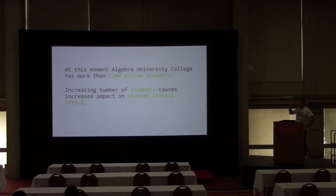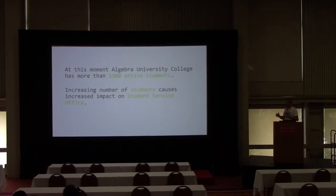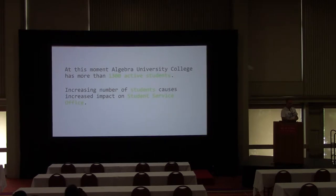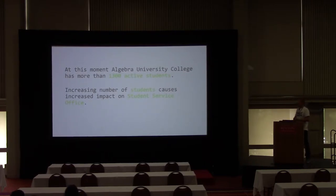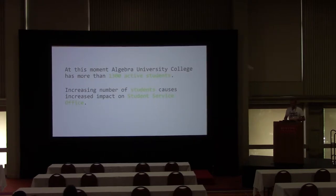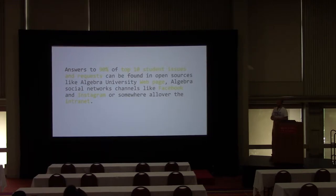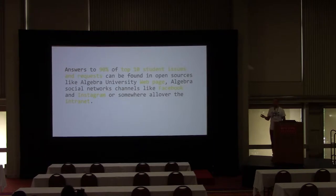Right now we have more than 1,300 active students, which is significant for Croatia with its three and a half million citizens. The problem is that with every new student we have more issues with the student service. A possible solution is not to hire more staff, but to re-engineer internal processes. During our research we discovered that almost 80% of student issues could be easily solved by existing services.